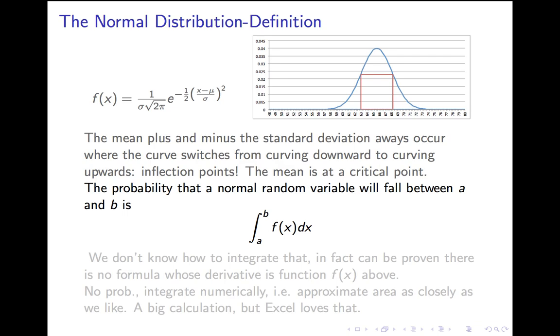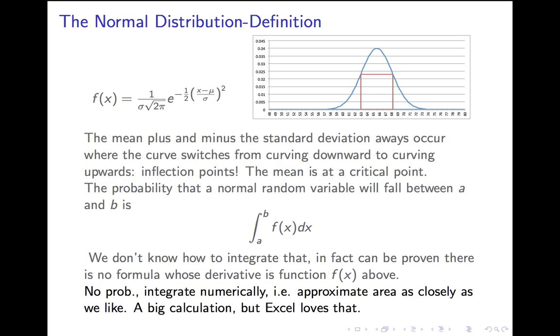So as we said, the probability that a normal random variable will fall between a and b is going to be the integral from a to b of this normal distribution. That looks like a scary thing to integrate, and you are right to be afraid, because not only don't you or I know how to integrate it, you can prove that there is no formula whose derivative is this function f of x. So none of the clever techniques that you learned in calculus to find an integral exactly will work here.